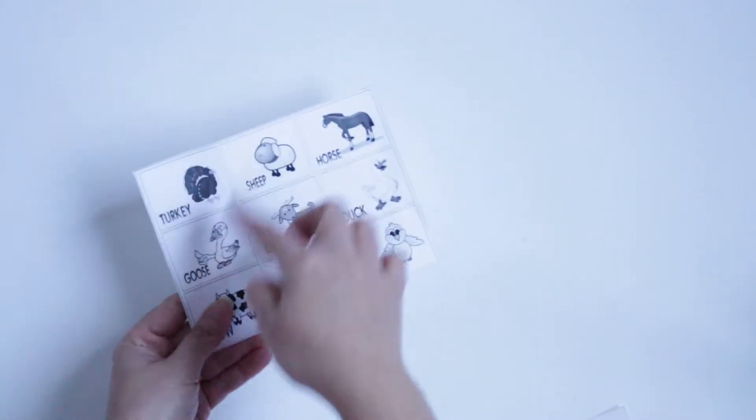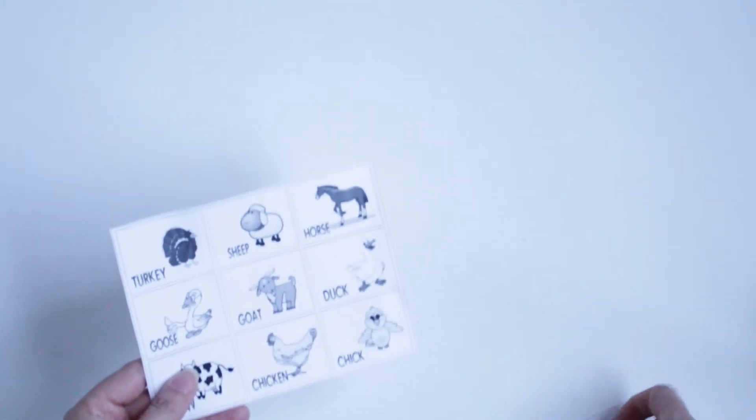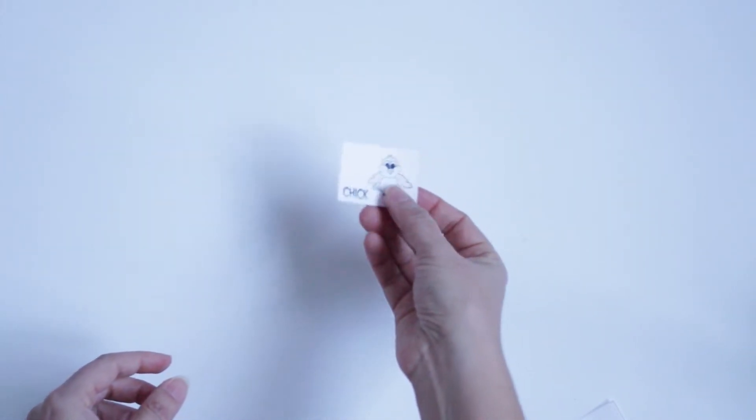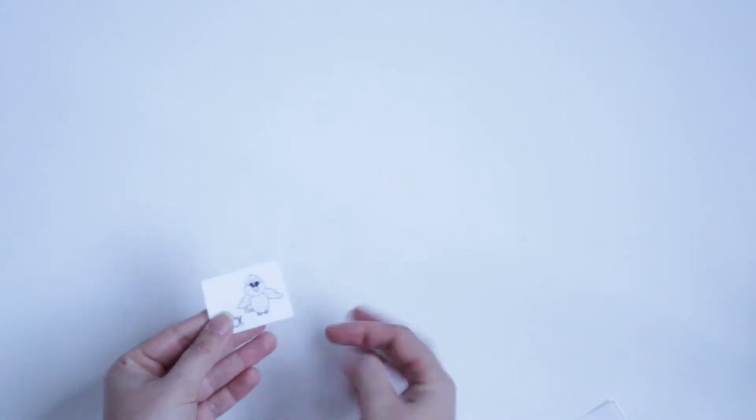Cut all the squares - you can ask your kid to cut them. But if you leave it like that, it's going to be transparent, so it won't work for a memory game because the kid can see on the back what the picture is.